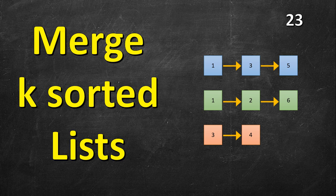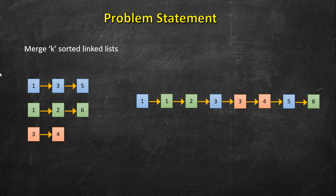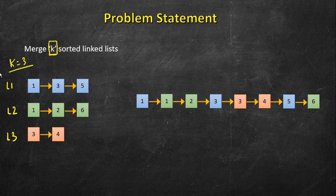In this video we are going to solve merging of K sorted lists. It's a very popular problem and it has been asked quite a few times at Facebook, Amazon, Google, Microsoft, Adobe, ByteDance, and many more companies. So it's a very important question. In this problem we are given K linked lists that are sorted — l1, l2, and l3, so in this case K is 3.